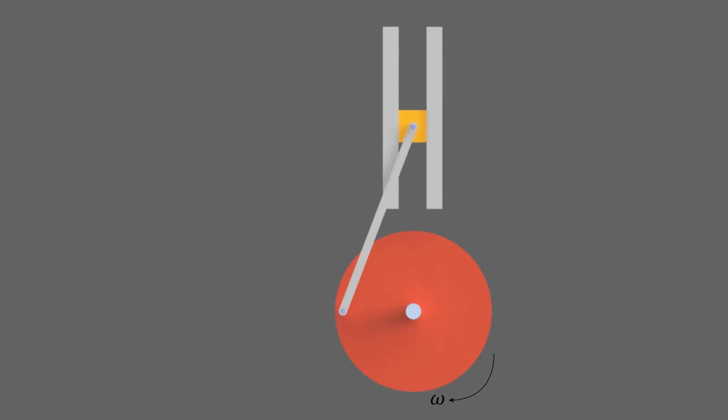You can find the instantaneous center of zero velocity for link CP by looking at different positions. At this position, we have a velocity vector at C acting tangent to the path upwards.